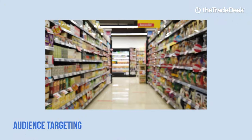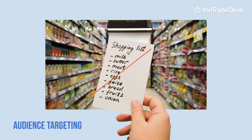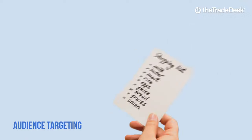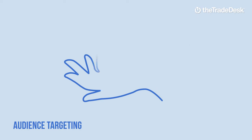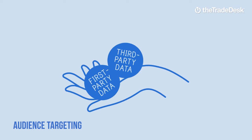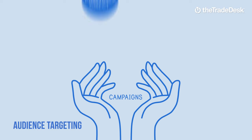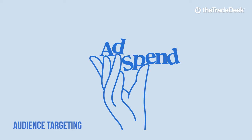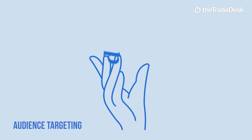First, there's a general lack of audience targeting. Think of it like going to the grocery store without a shopping list — you'll probably come home with some of the stuff you needed, a bunch of stuff you didn't, and even a couple things you already had. The same goes for your CTV buys, but instead of a shopping list it's your first and third-party audience data. When you buy publisher direct or programmatic guaranteed, you can't apply that data to your campaigns. And what's worse, you leave all the control in the publisher's hands, so there's a good chance you're wasting precious ad spend reaching people who have already purchased your product or those who have no interest in it at all.